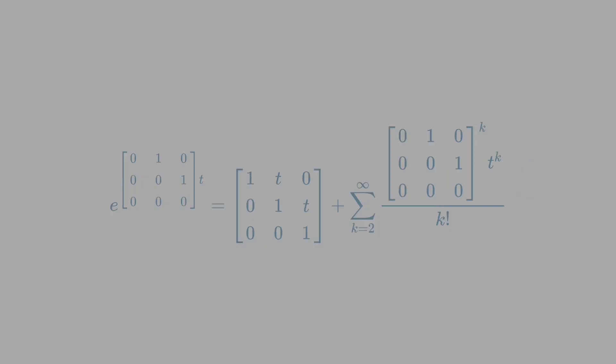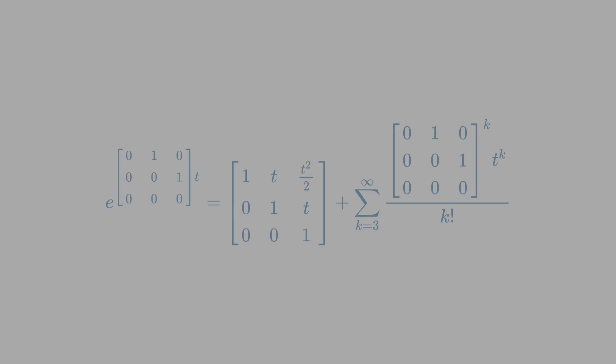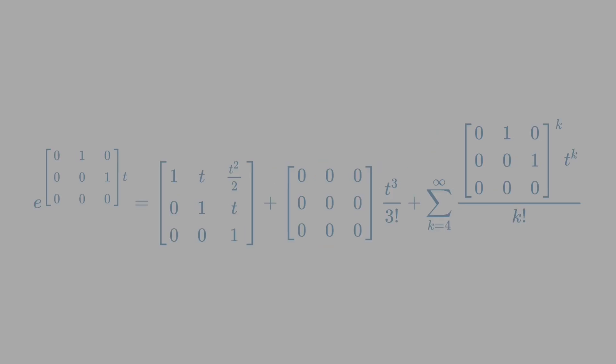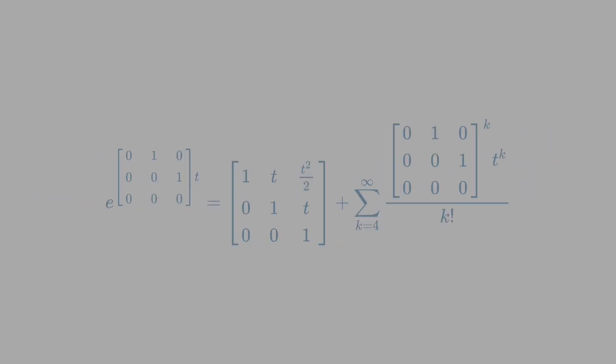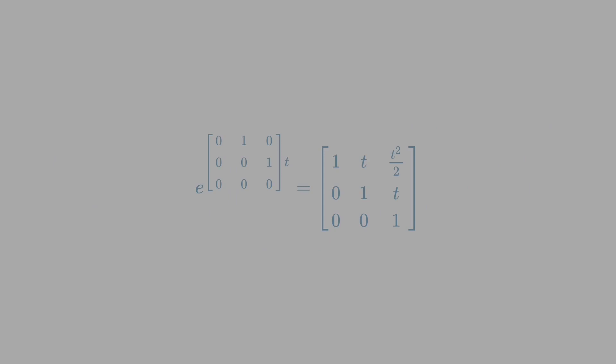After sufficient terms of the series, we observe that the powers of the matrix become zero. This means all terms after that become irrelevant for the calculation and can be ignored. This also gives rise to the formula of a parabola, the shape that a ball traces in air.